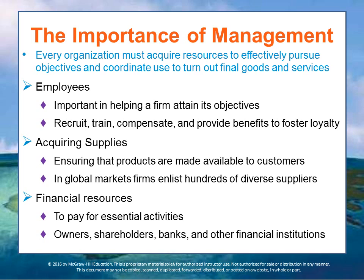Acquiring suppliers is another important part of managing resources and ensuring that products are made available to customers. As firms reach global markets, companies such as Walmart, Corning, and Charles Schwab enlist hundreds of diverse suppliers that provide goods and services to support operations. A good supplier maximizes efficiency and provides creative solutions to help the company reduce expenses and reach its objectives.